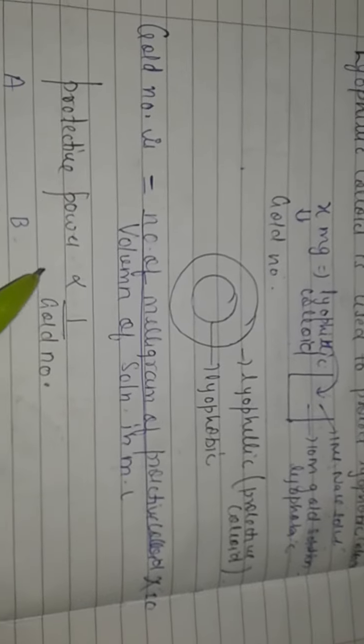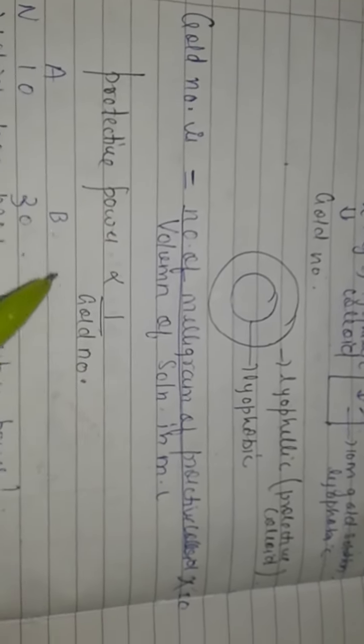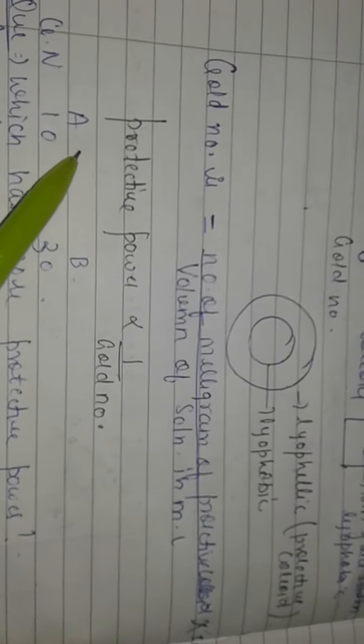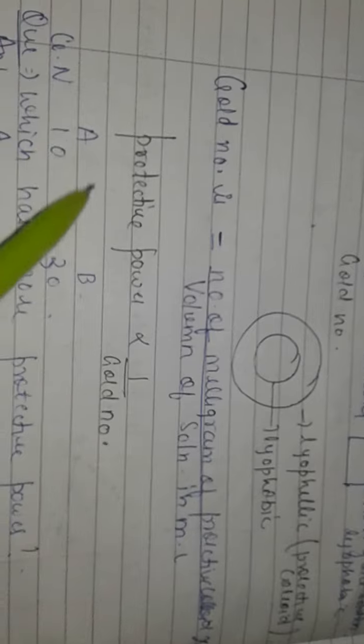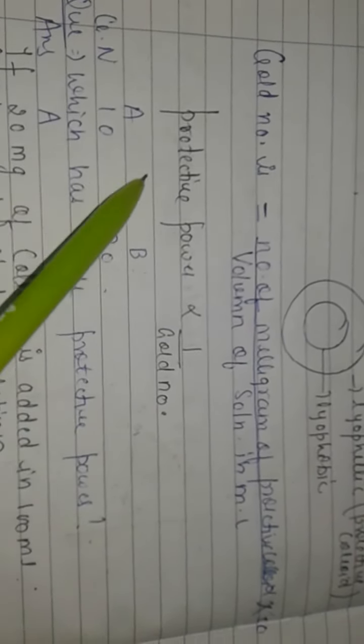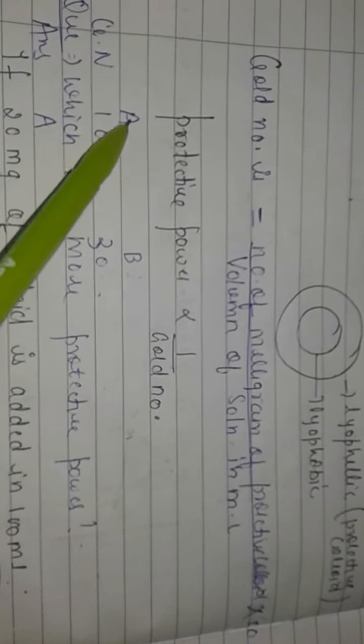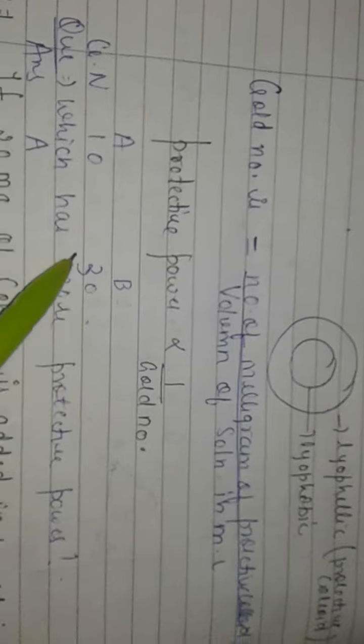Like if we have two colloids with gold numbers - colloid A with gold number 10 and colloid B with 30 - then we will ask which has more protective power. So we will say A, because if we add 10 we will protect it and we need to add 30 for B. So A is more protective.